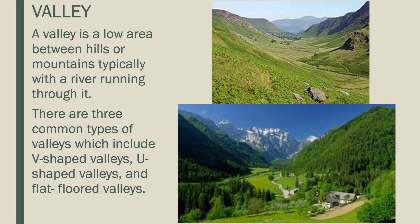Another type of landform is a valley. A valley is a low area between hills or mountains, typically with a river running through it. There are three common types of valleys, which include V-shaped valleys, U-shaped valleys, and flat-floored valleys.